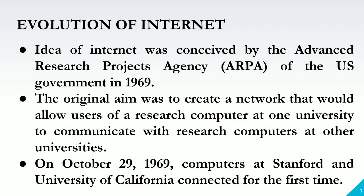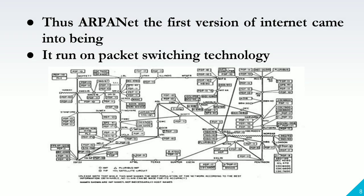On October 29, 1969, computers at Stanford and the University of California connected for the first time. In effect, they were the first hosts on what would one day become the internet. This was the first connection between two computers — at Stanford University and the University of California. An advantage of ARPAnet's design was that because messages could be routed or rerouted in more than one direction, the network could continue to function even if parts of it were destroyed in the event of a military attack or other disaster.